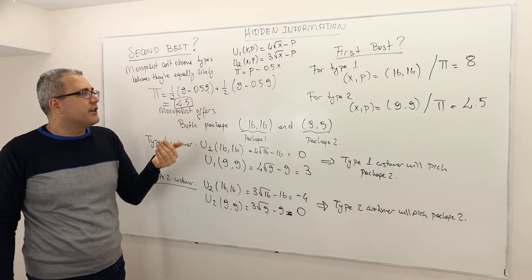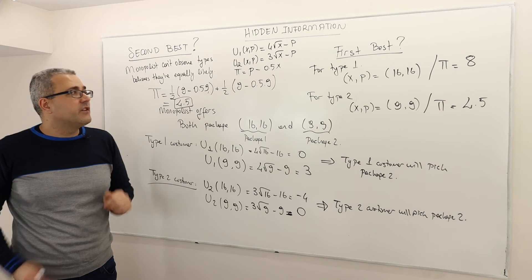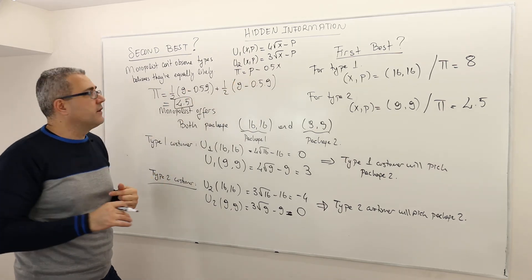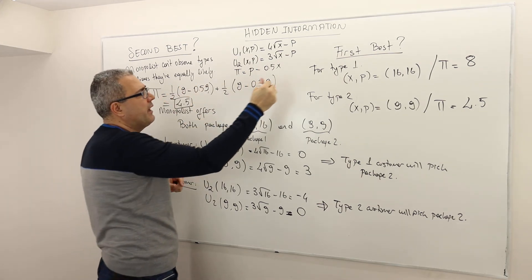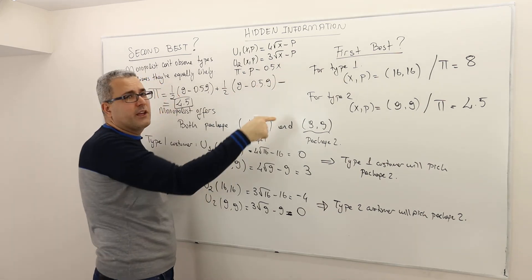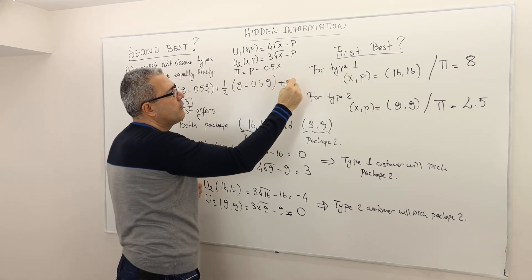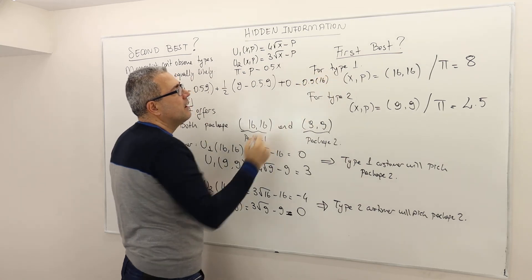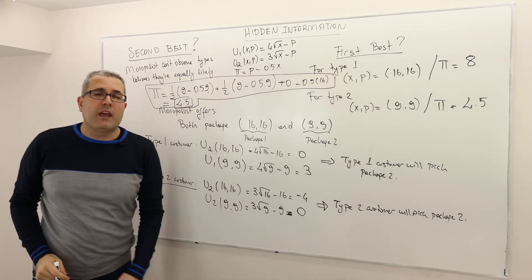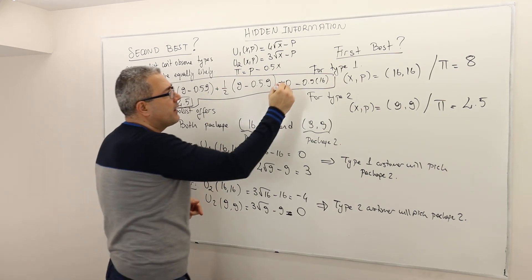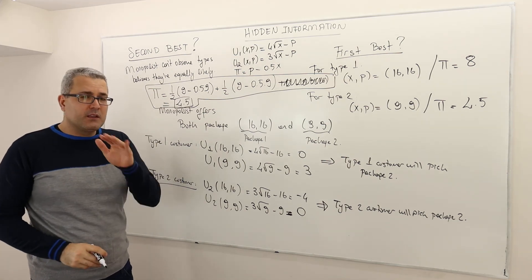You may say, but the monopolist is offering two packages. So here in this expected profit calculation, there's only one package produced. What about the producing the package of 16 at a price 16? Well, but this will never be sold. So you may say, the true expected profit should be the following. This is the expected benefit from selling the 9,9 package, but there should be - remember the package of 16 produced and it's not sold. So it's zero minus 0.5 times 16. So this should be the profit of the firm. You may argue. Good point, but this is not true.